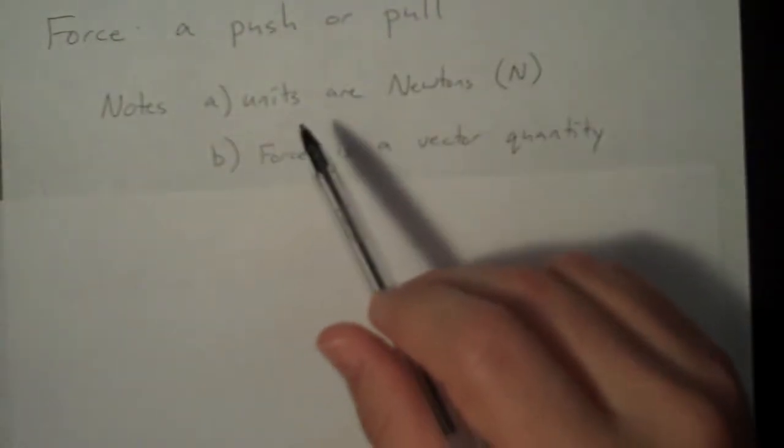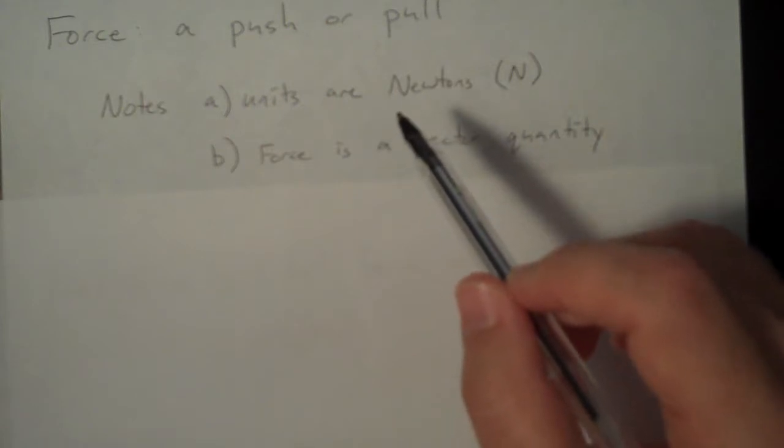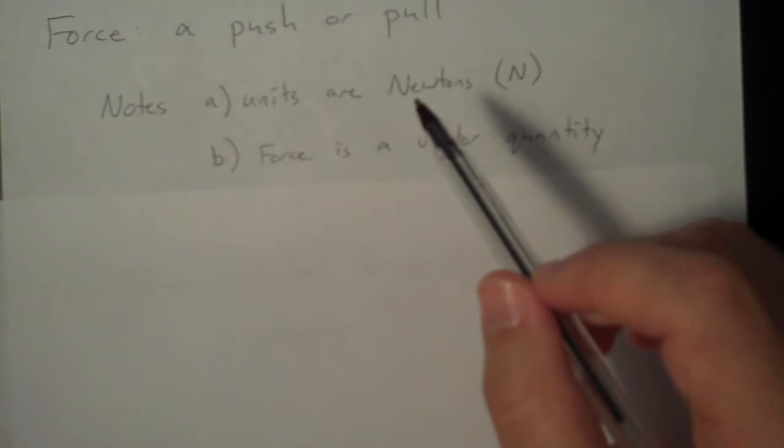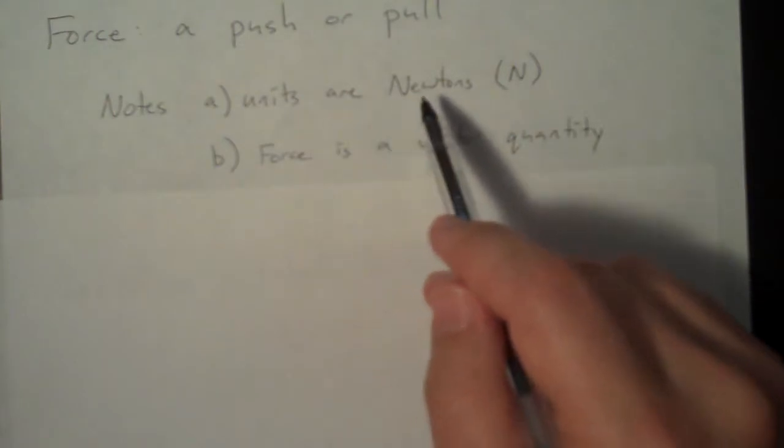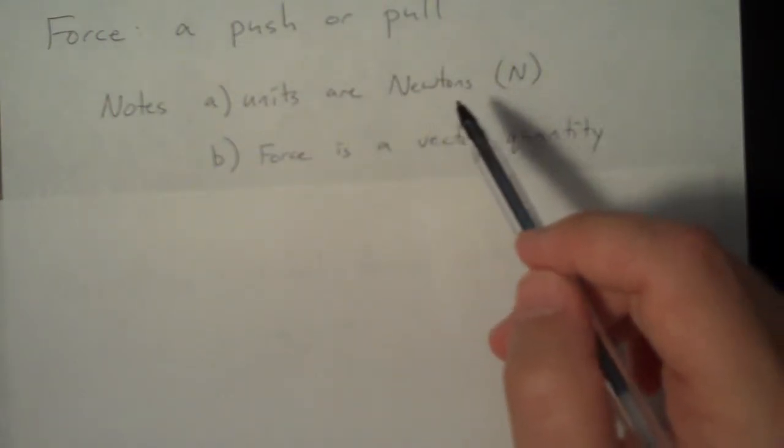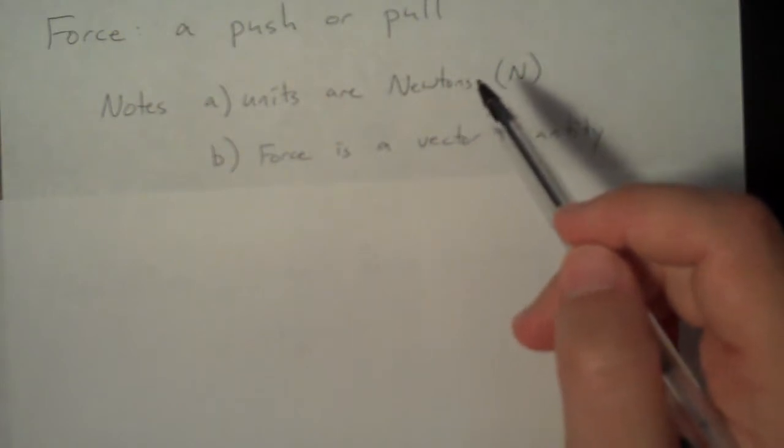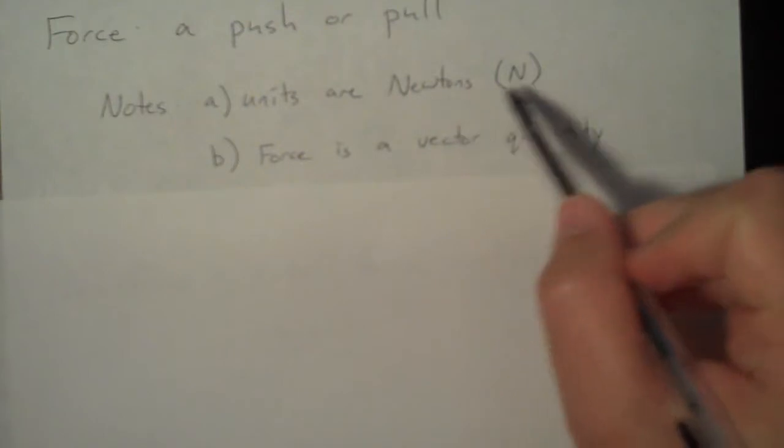Anytime we introduce a new physical quantity, we should denote what units we are using to describe it in calculations. So the standard unit for force is the Newton, named after Isaac Newton, who's also the namesake for these three laws of motion. And you can abbreviate Newtons by just the capital letter N.